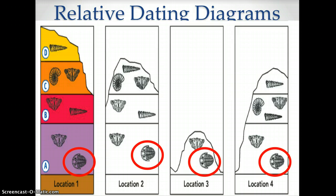In this image, we can get the relative age of layer A by using the index fossil circled in red, because that fossil only existed in layer A. So if scientists knew the age of the fossil, they could determine the age of the rock. We also know it was extinct by the time layer B formed.